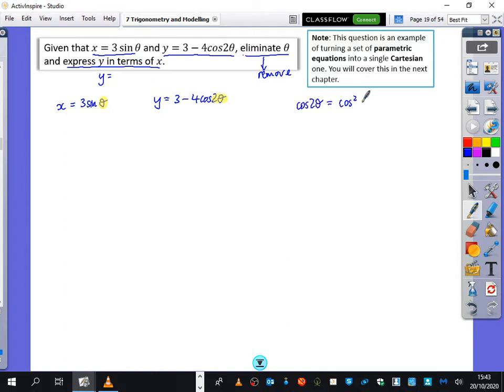There's either cos squared theta minus sine squared theta, there's 2 cos squared theta minus 1, or there's 1 minus 2 sine squared theta, and there's a choice of number 1, number 2, or number 3.